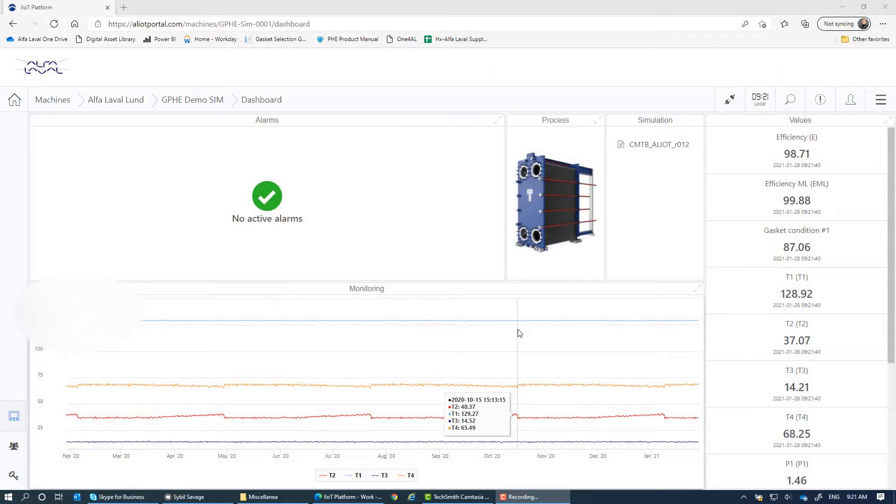So this is the main screen of connectivity. Here you have efficiency. Here you have efficiency machine learning. Here you have the gasket condition and here you have the temperatures.